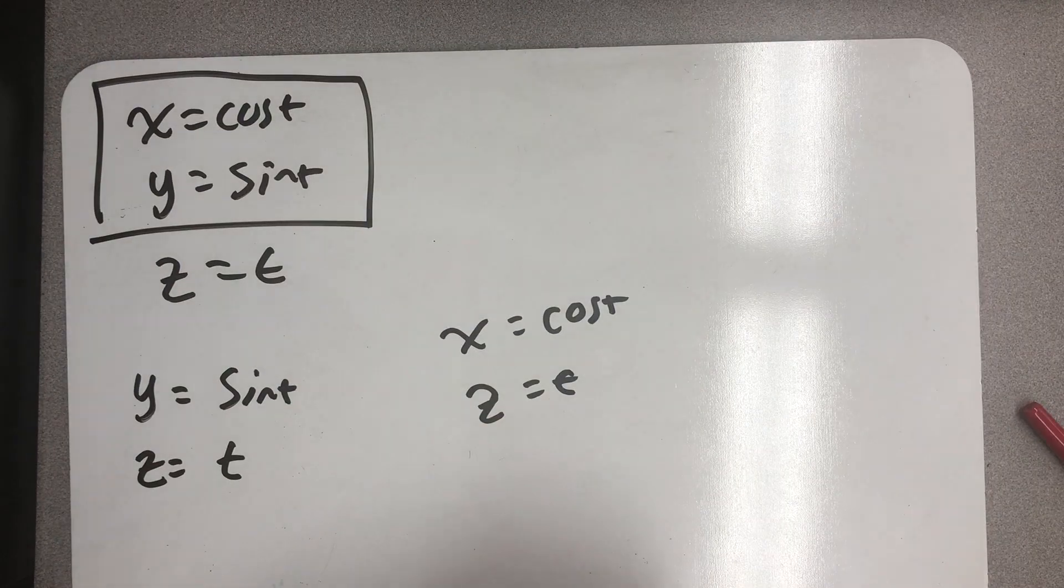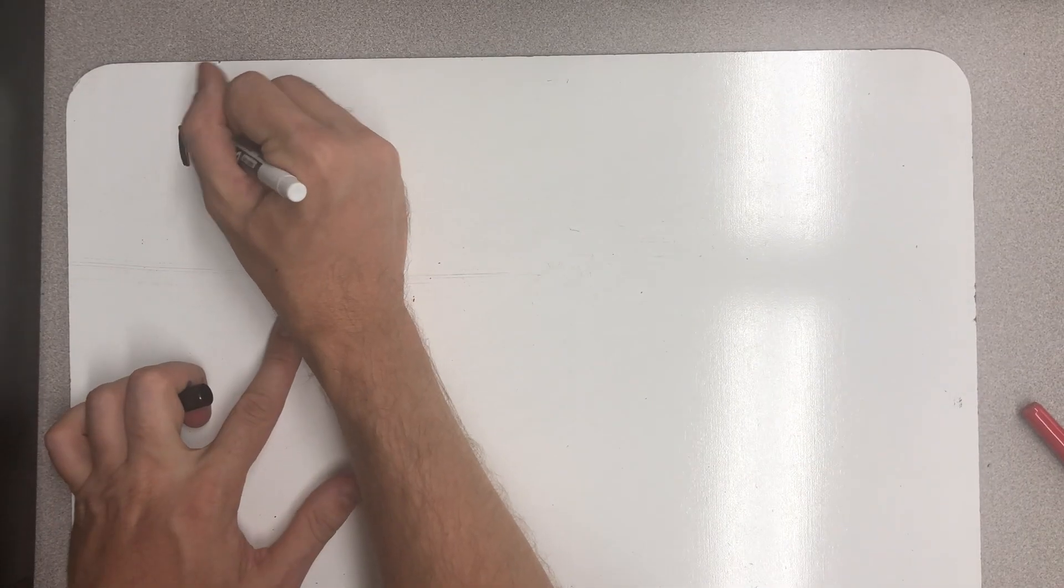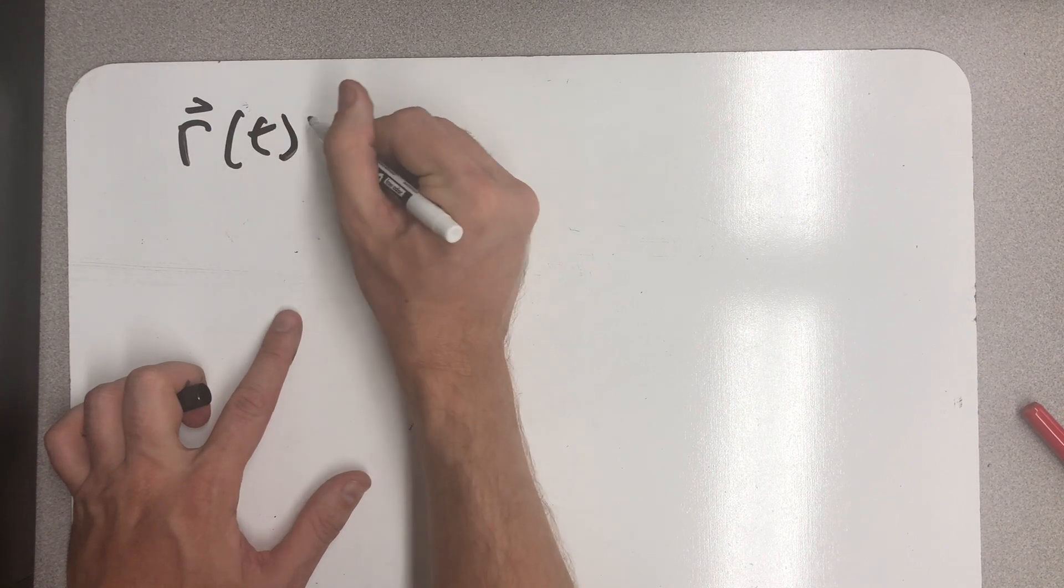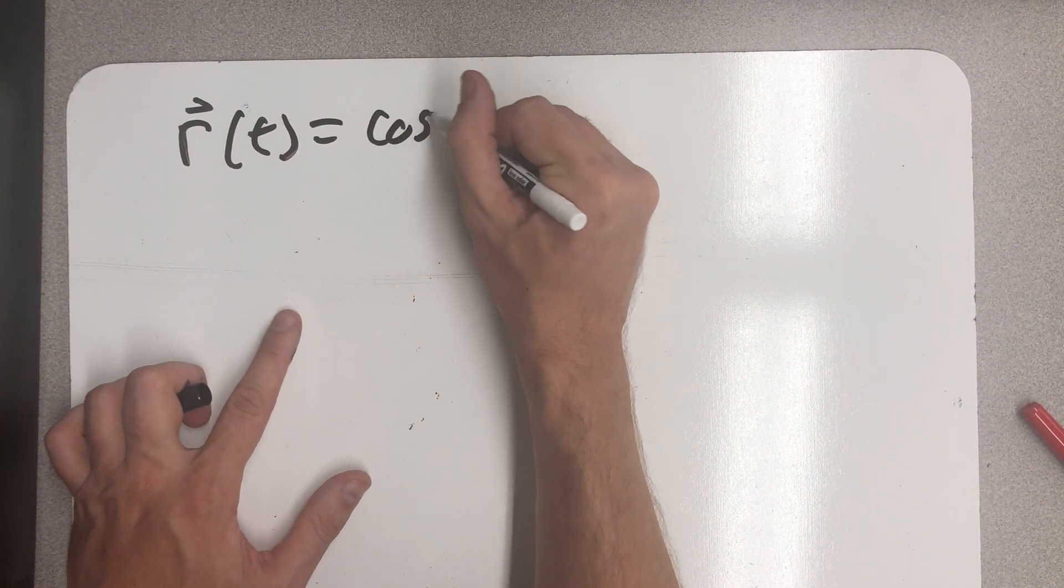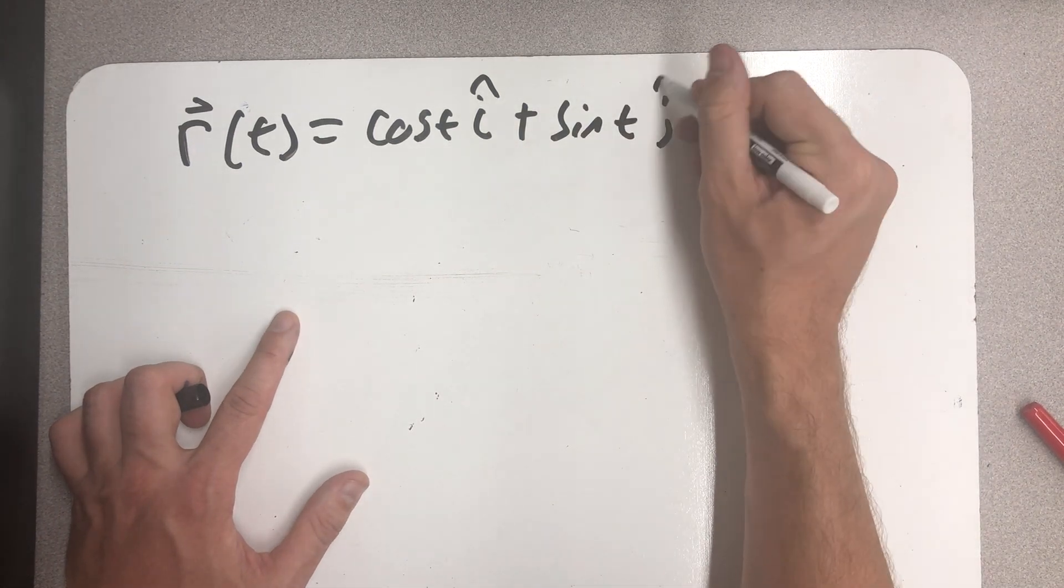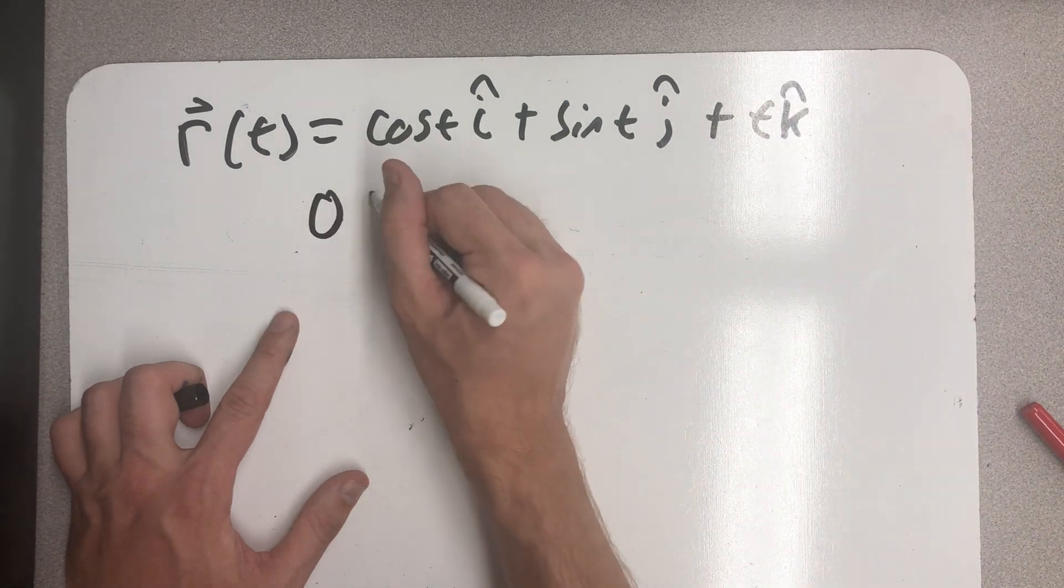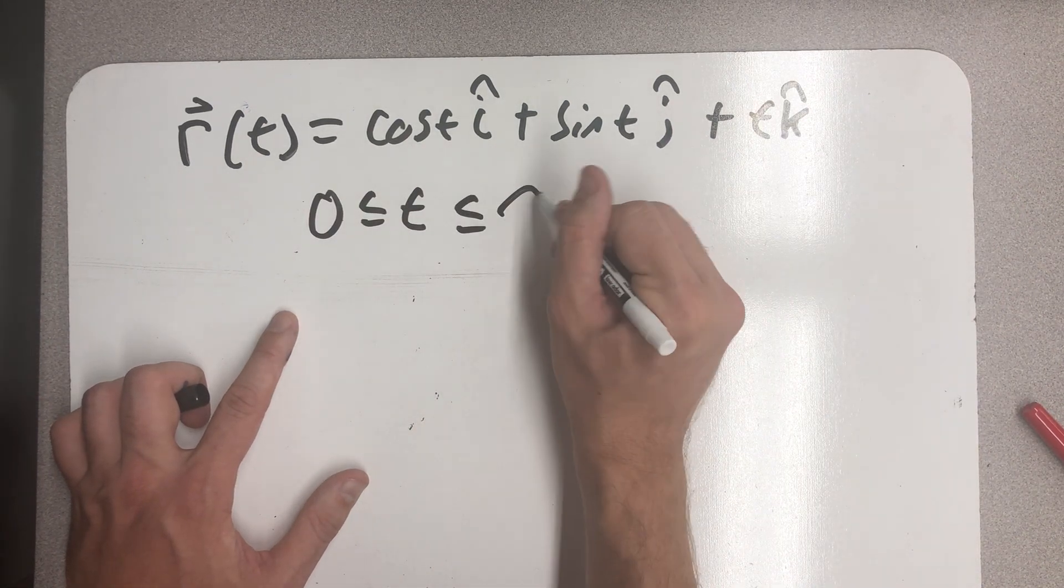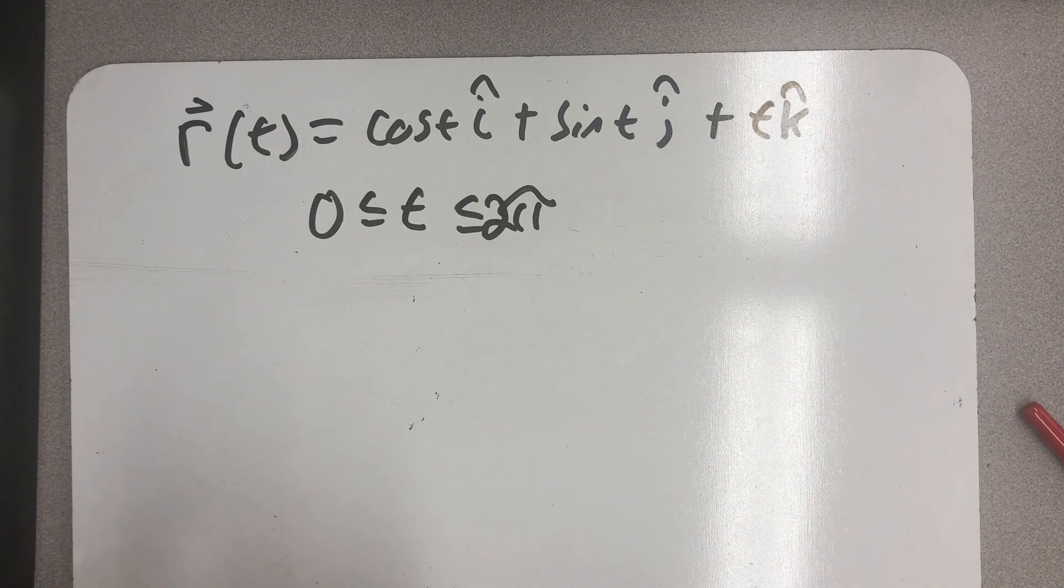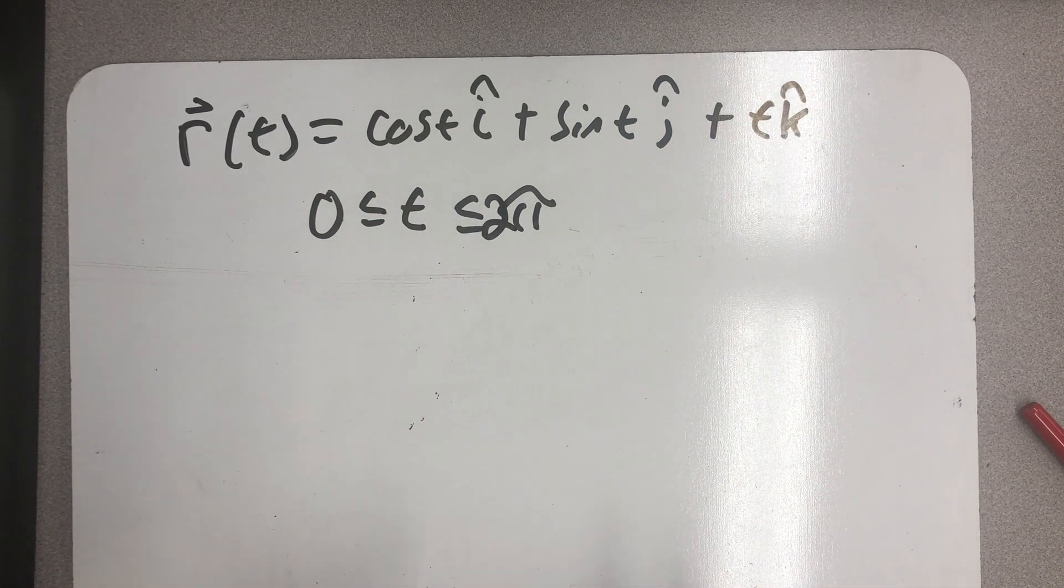All right. So there is a space curve generated by that set of parametric equations. The same way as in the plane, I could imagine that as a vector function, a function that points from the origin to a point on that helix. And so the vector-valued function that generates that helix is this one.